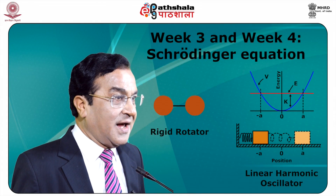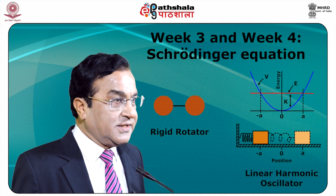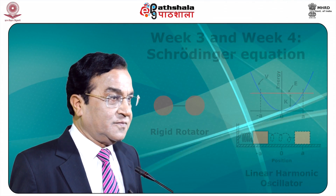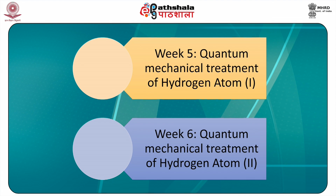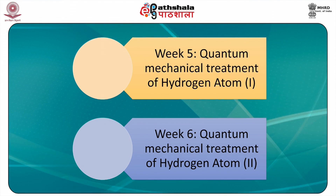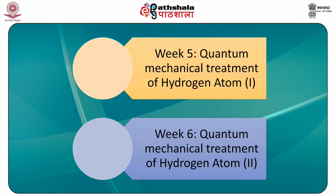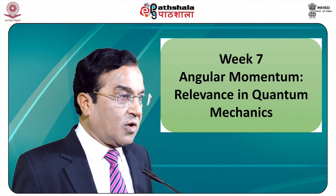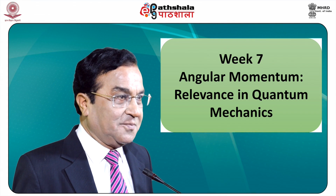In the third and fourth weeks we will solve the Schrödinger equation for a rigid rotator and a linear harmonic oscillator respectively. After these model studies, in the fifth and sixth weeks we will take up the simplest chemical system, that is the hydrogen atom, and will solve the Schrödinger equation for the hydrogen atom. The seventh week of this MOOC will be devoted to the concept of angular momentum and its relevance in quantum mechanics.